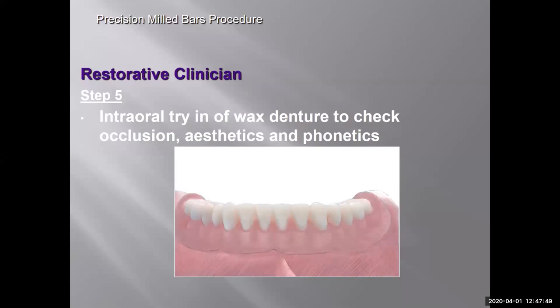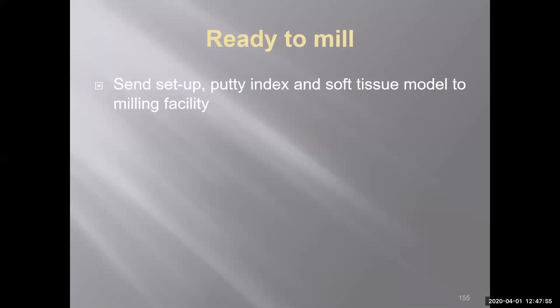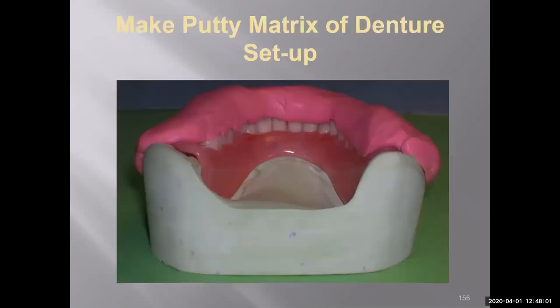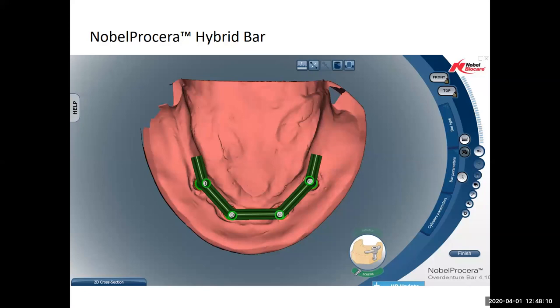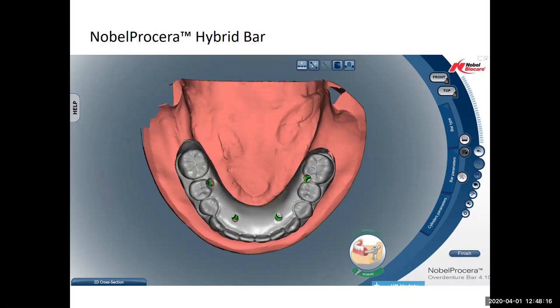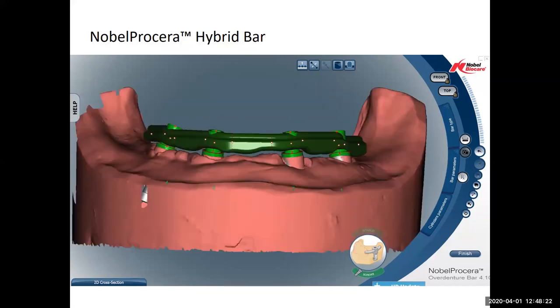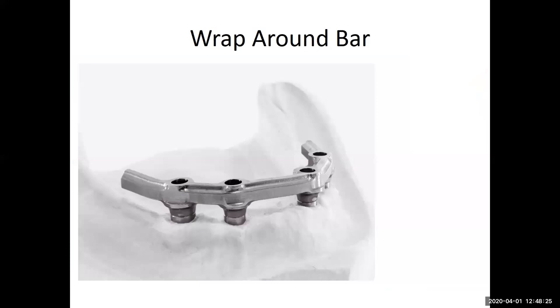Step five: everything looks good on the wax try-in — we check occlusion, aesthetics, and phonetics. Then we're ready to mill the denture and send the putty index, setup, and soft tissue model to the milling facility. This happens to be a Nobel Procera hybrid bar. They send photos and a verification JPEG, and within a week or so I can judge whether we're going to have enough room, it's in the right position, then give approval to go ahead and mill the bar. Once the bar is milled correctly and returns to the laboratory, we're ready for the final denture setup.